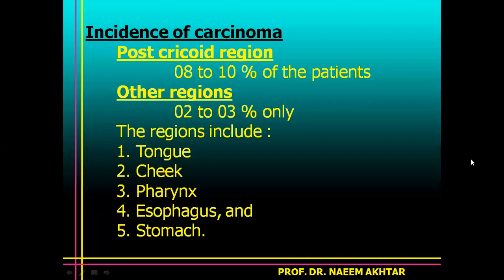Incidence of carcinoma in the post-cricoid region in Plummer-Vinson syndrome is about 8 to 10 percent of patients. In other regions — including tongue, cheek, pharynx, esophagus, and stomach — the incidence of carcinoma is only 2 to 3 percent.